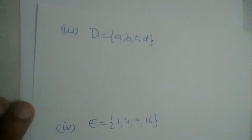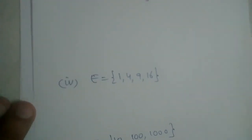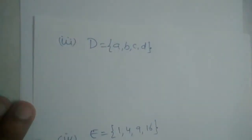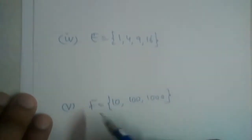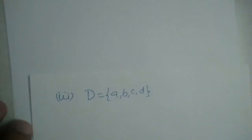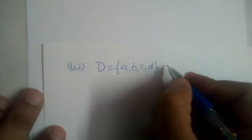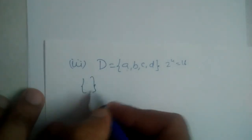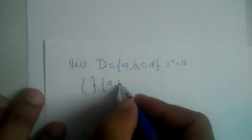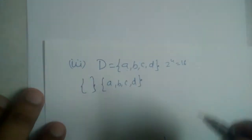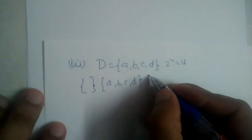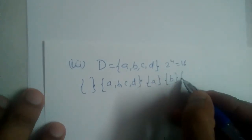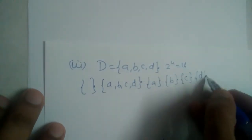Now I have a few more examples. Pause the video and write all the subsets. D = {a, b, c, d} and E = {1, 4, 9, 16} and F = {10, 100, 1000}. For D, n is equal to 4, so we have 2 power 4 equals 16 subsets. Let us write first the empty set and the set itself {a, b, c, d}. Then the single-element subsets: {a}, {b}, {c}, {d}.